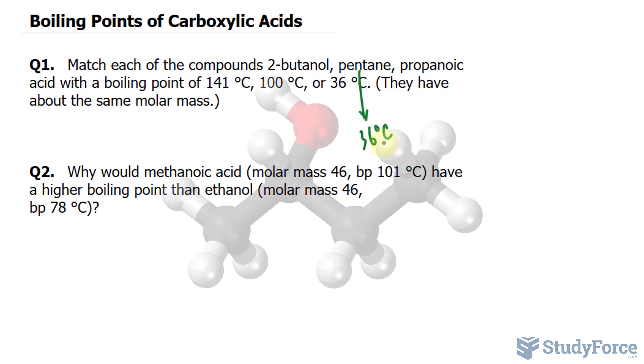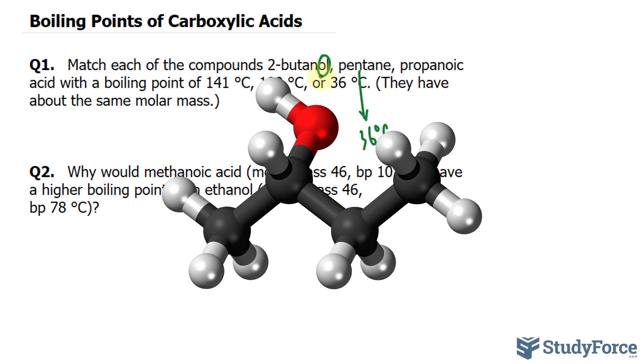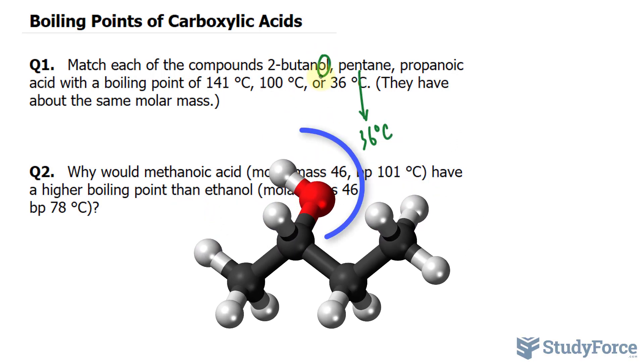Next, we have 2-butanol. Whenever you have OL at the end of a word, you know that it contains a hydroxyl group, so it's an alcohol. Alcohols generally have a higher boiling point because they can form hydrogen bonds. This is why I'm going to say that 2-butanol is 100 degrees Celsius.